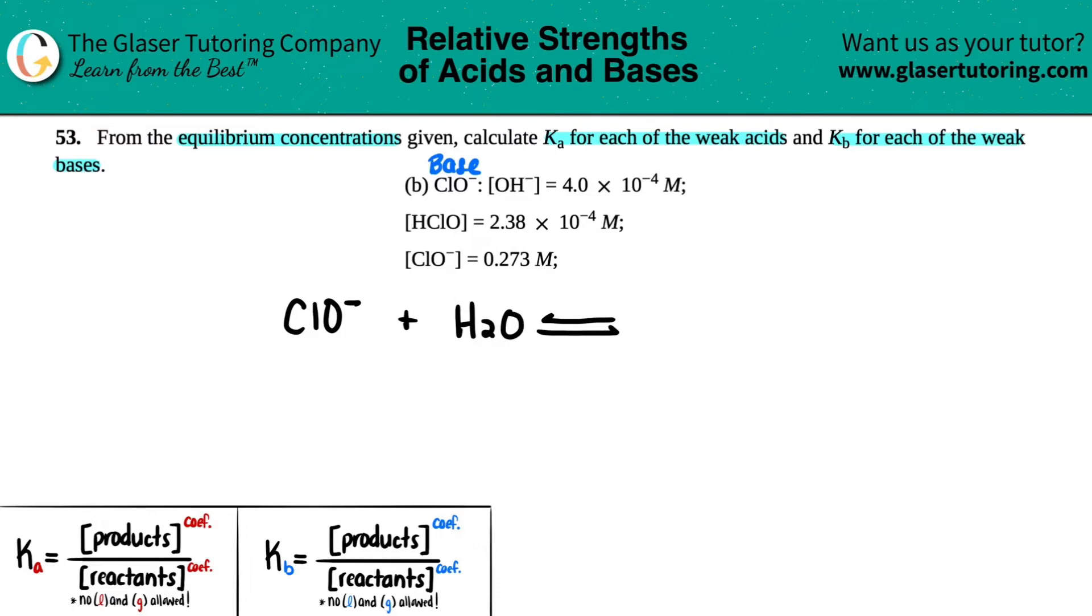The acids will lose one. So this will turn into HClO, and that's why this is here. And then, it would be OH-, and that's how you know that you're dealing with the base. Okay, so we have this. Beautiful.